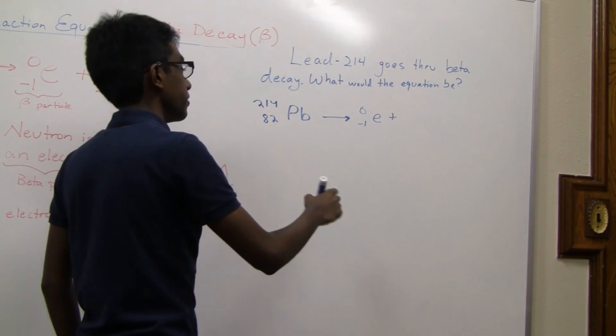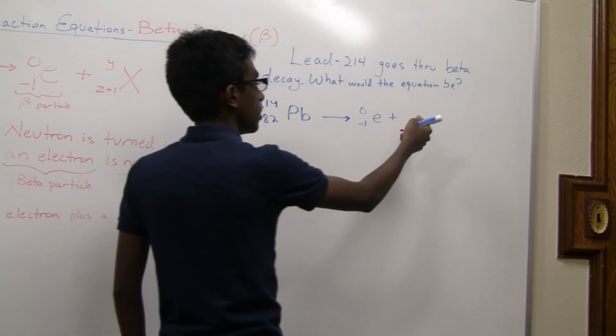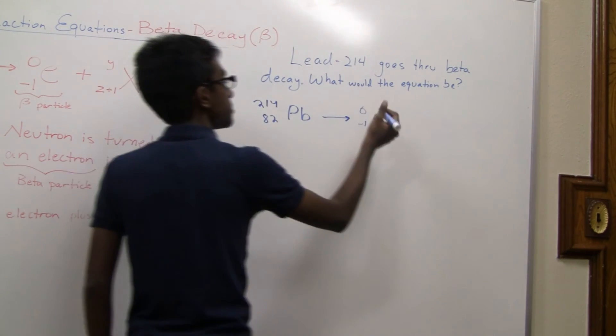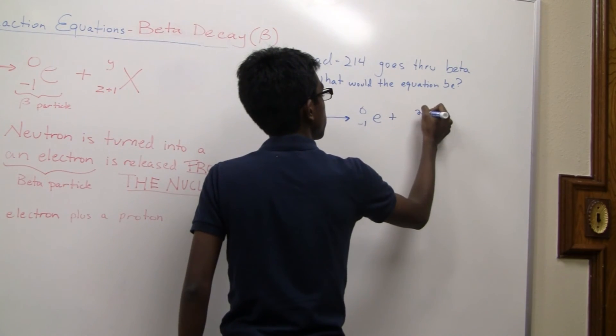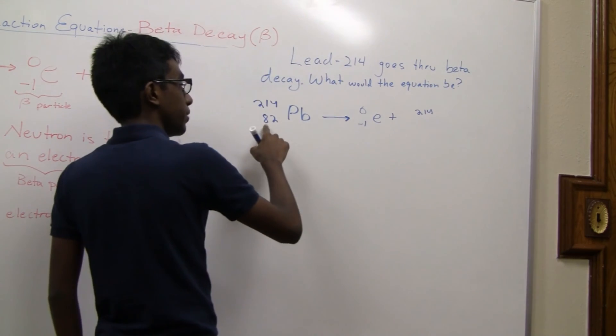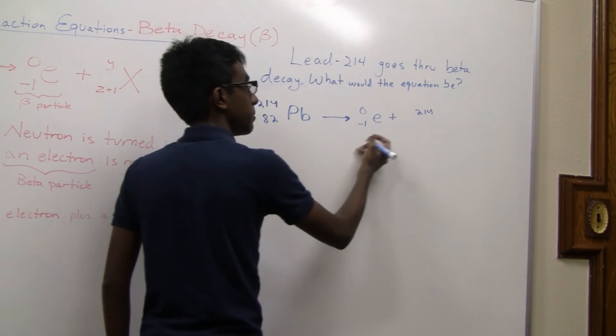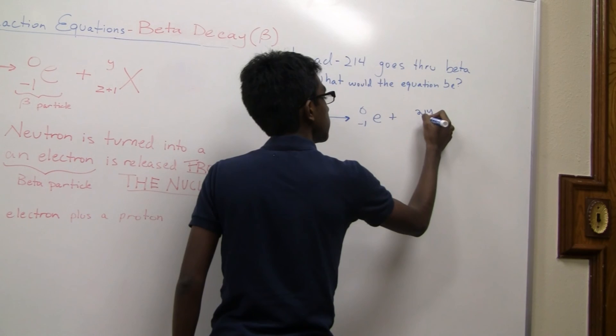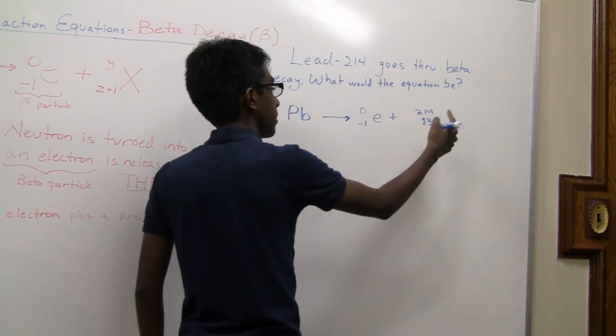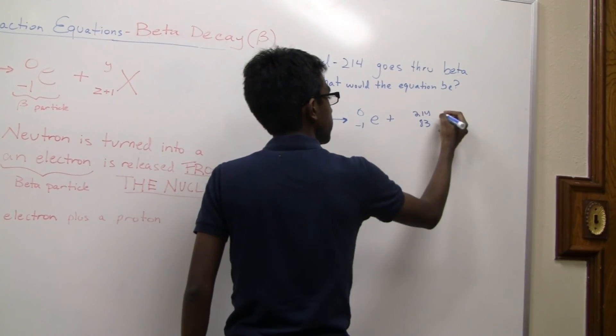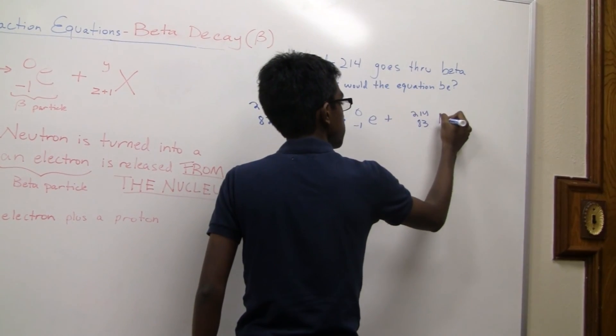And then our new atom is going to have the same mass number, so that's 204. But then we're going to have to do 82 plus one to balance the minus one here. It's going to have an atomic number of 83, and the symbol for that is bismuth.